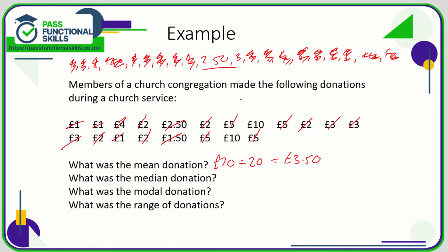We have two values in the middle, and we're expecting two because there's an even number of values. What's halfway between two pounds fifty and three pounds? That is £2.75. If you're struggling, just do £2.50 plus £3.00 equals £5.50, then divide by two — giving £2.75.